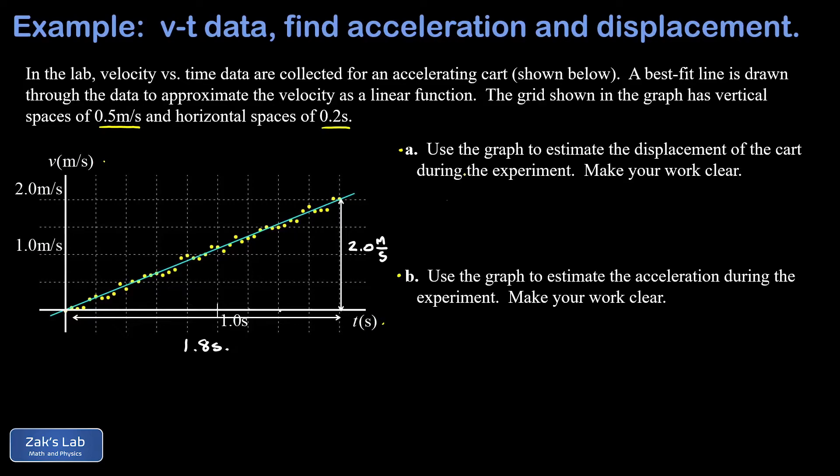When we get the area of that triangle, I have one-half times the base, 1.8 seconds, times the height, 2.0 meters per second. The twos are going to cancel here and I end up with 1.8, and then look what happens to the units - the seconds cancel and I end up with meters for my estimated displacement.